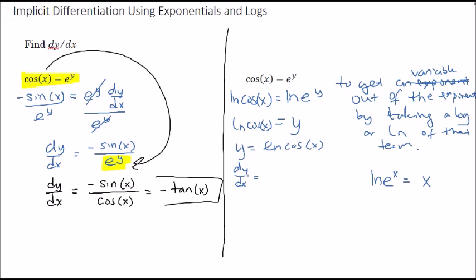dy dx or y prime is 1 over the cosine of x from the derivative of ln, times - remember there's a chain rule here - negative sine of x. And we end up with the same exact solution.